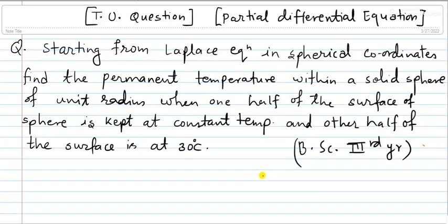Hello everyone. Today I have a video related to partial differential equations for PhD third year mathematical physics. Here is a question which was asked in a university examination a few years back. The question is: starting from the Laplace equation in spherical coordinates, find the permanent temperature distribution within a solid sphere of unit radius when one half of the surface is kept at a constant temperature and the other half is at 30 degrees centigrade.